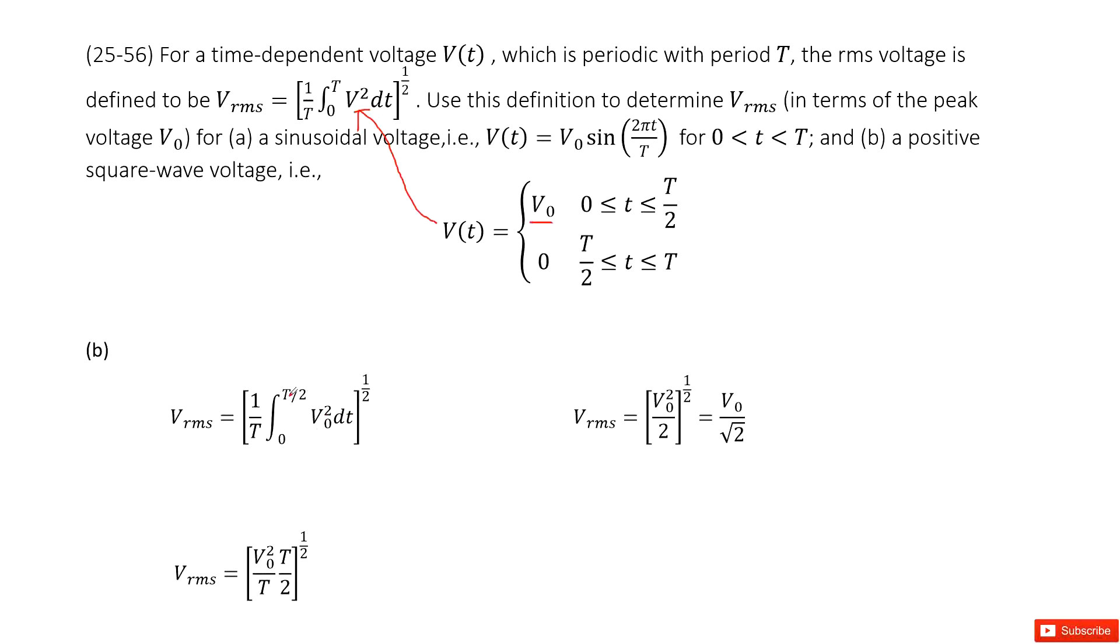The integral becomes 0 to T over 2. And you can see V0 over 2 is a constant. Take it out and do the integral. We get a function look like this one and simplified, we get a final answer there. Thank you.